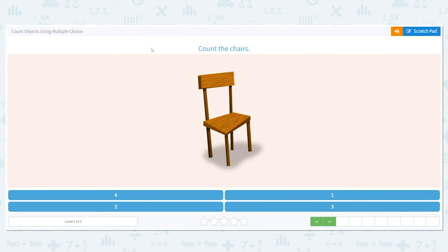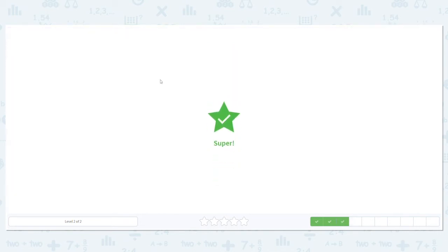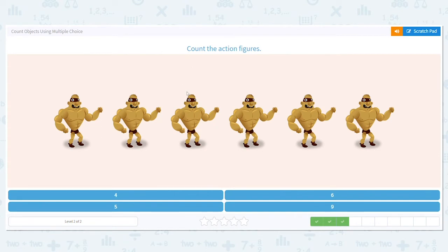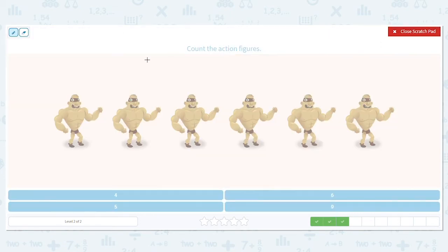Count the chairs. Wow, there's not a lot there. Our answer choices are four, one, three, or two. How many chairs do you see? I just see one. Good job. Count the action figures. It's either going to be four, six, five, or nine. So let's mark as we count them off. Count with me.